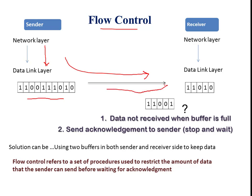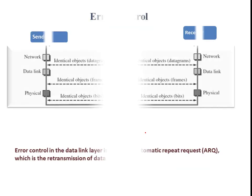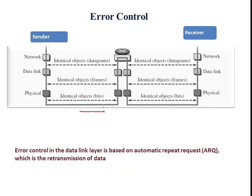There are two key issues we face while transferring data from sender to receiver. First is flow: if the sender's capability is high and the receiver's capability is less, the receiver will not be able to collect all the data. Once the buffer at the receiver side is full, remaining data are dropped, or the receiver will ask the sender to stop and wait until previously received data are processed.